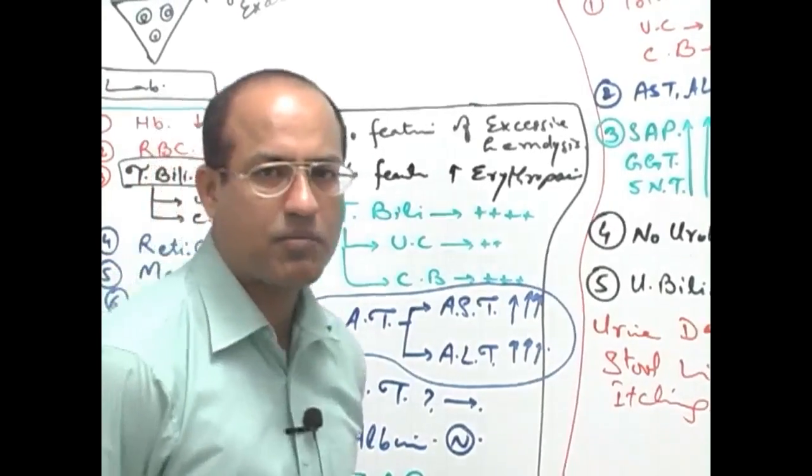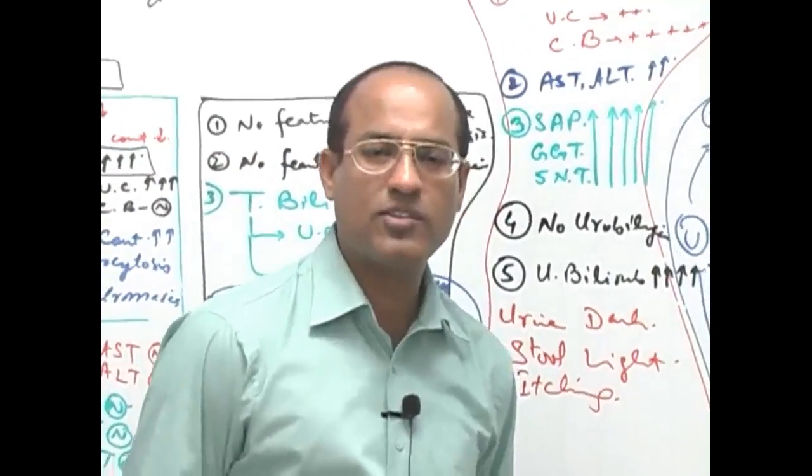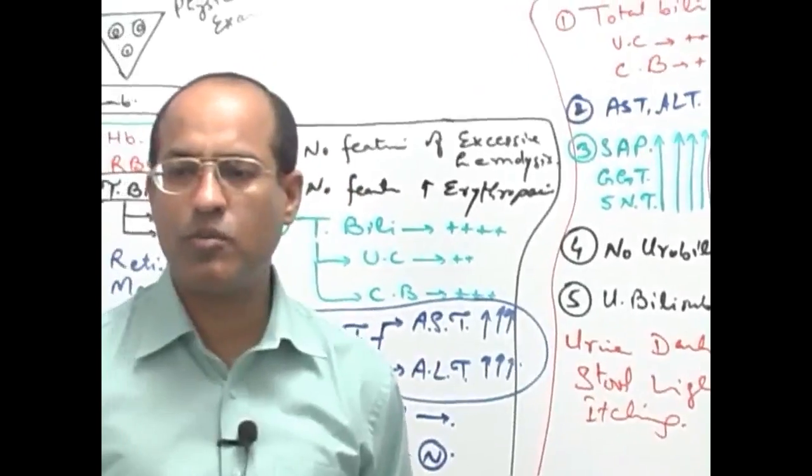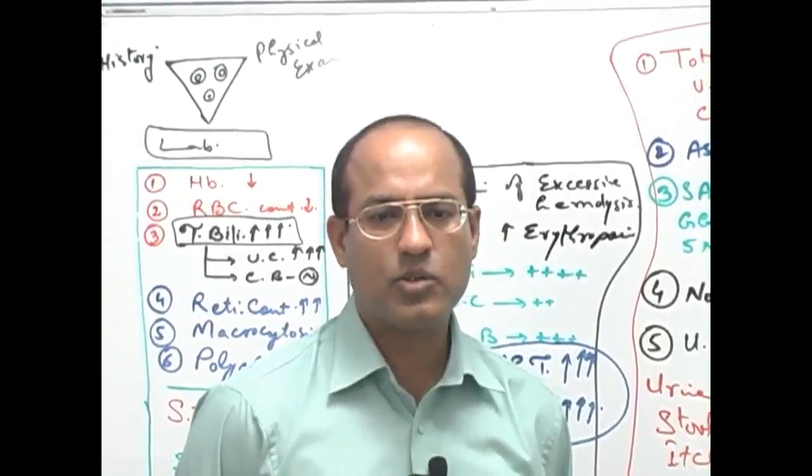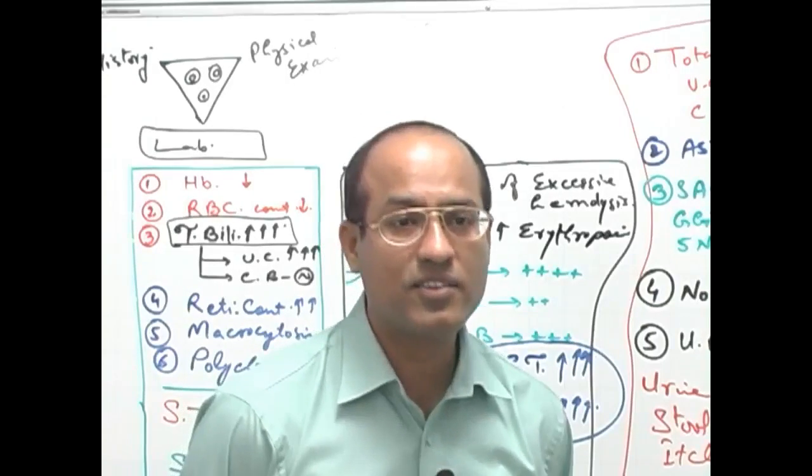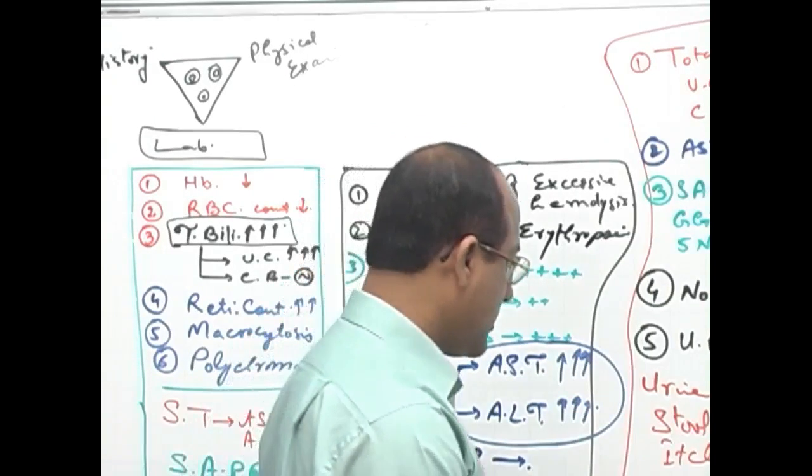And really in cholestasis, if it becomes prolonged, lot of cholesterol is retained in the body and this cholesterol may produce special yellowish plaques under the skin. We call them xanthomas and xanthelasmas.